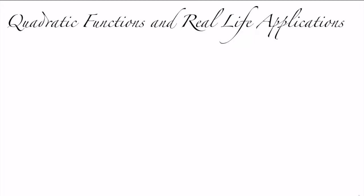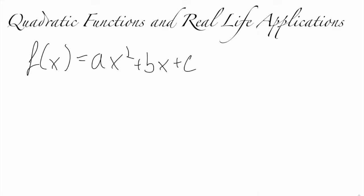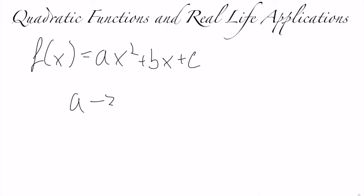In the most brief sense, the function f of x, which is a quadratic function, can be written down as ax squared plus bx plus c, where a is the coefficient of x squared, b is the coefficient of x, and c is a constant.